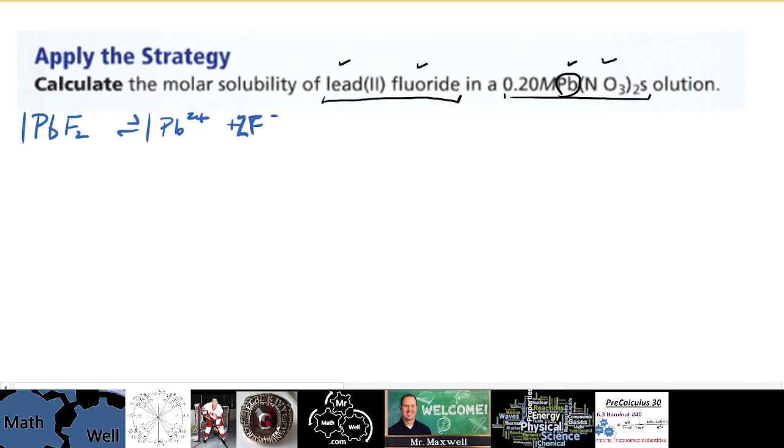I'm not sure that we need to use an ice chart here for this one. But if X amount of this in solid form is going to dissolve, it's going to produce 1X of this ion and 2X of this ion. So we know that.